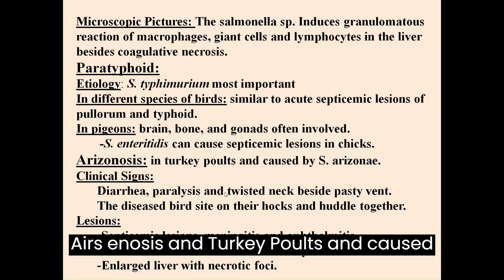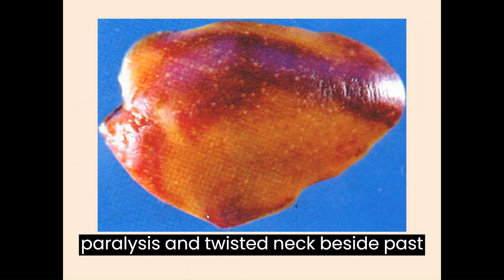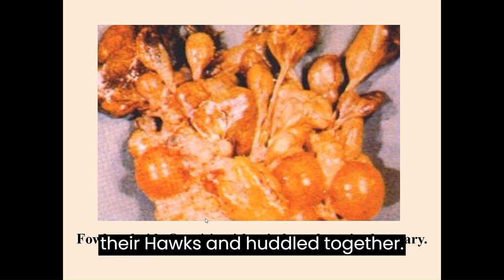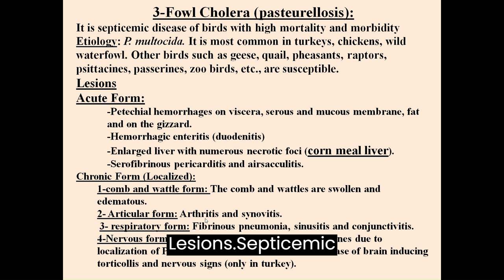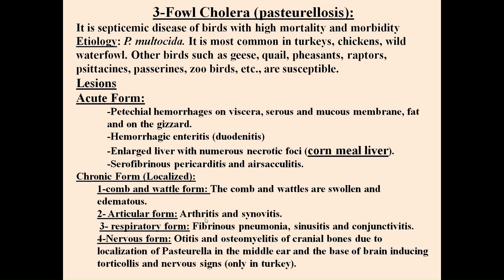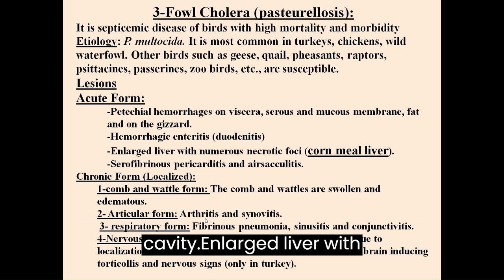Arizonosis in turkey poults is caused by S. arizona. Clinical signs include diarrhea, paralysis and twisted neck. The diseased birds sit on their hocks and huddle together. Lesions include septicemic lesions, meningitis and ophthalmitis, as well as caseated material in the abdominal cavity.